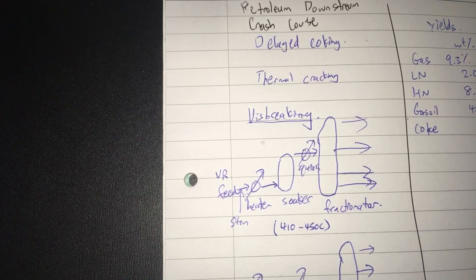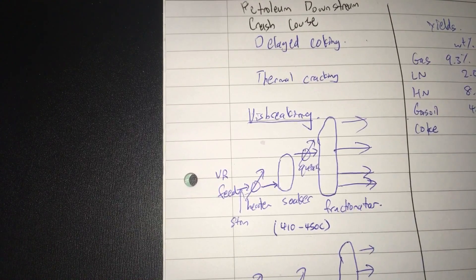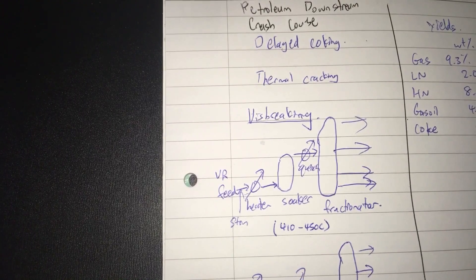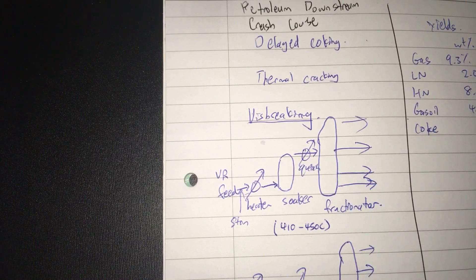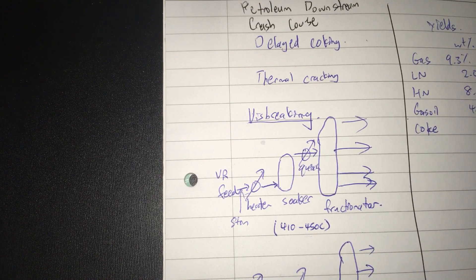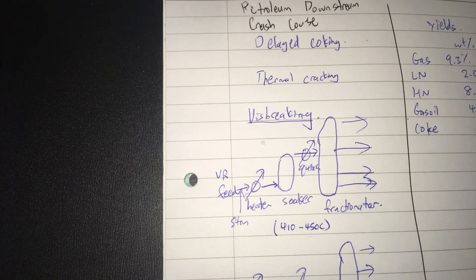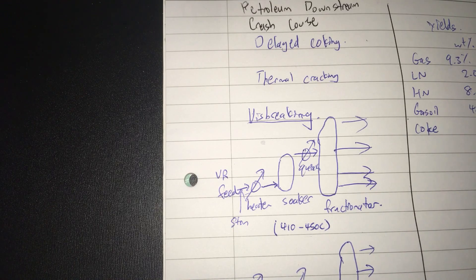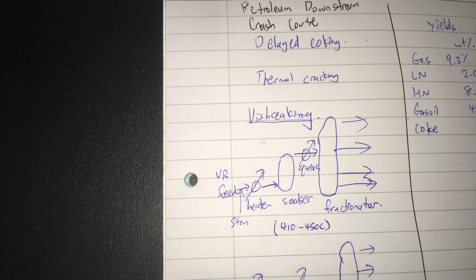The main reason why you want to dilute that fuel is to reduce its viscosity. Through visbreaking, you can reduce the viscosity of the vacuum residue so that less of the gas oil or cutter stock is needed to dilute the vacuum residue to make it an acceptable viscosity for use as ship fuel or bunker fuel.